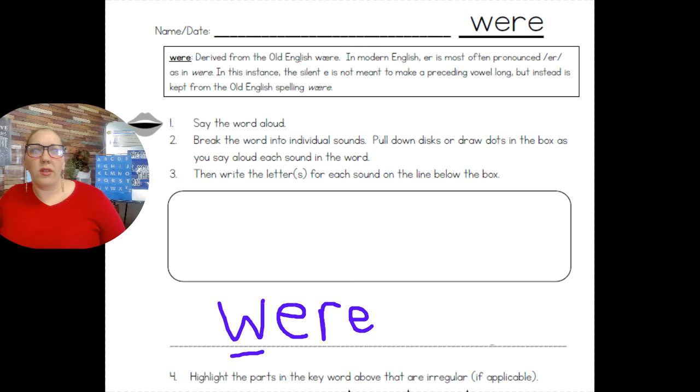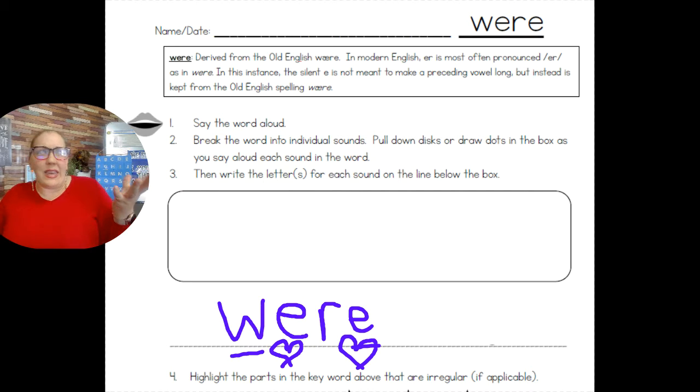Er, er. Hmm. Well, I know usually this E will be making this vowel say its name, but it's not 'we-er'. So it is not following the rules. And this E is not following the rules. He's the silent E. He's supposed to say 'say your name', but he's not listening. He's not following the rules.